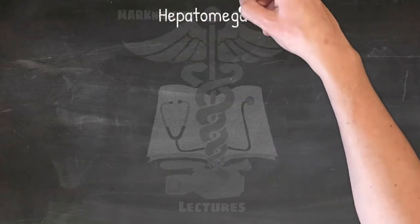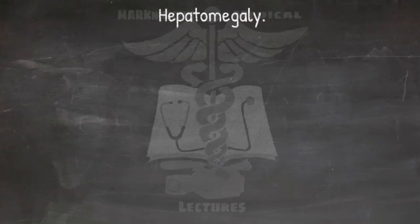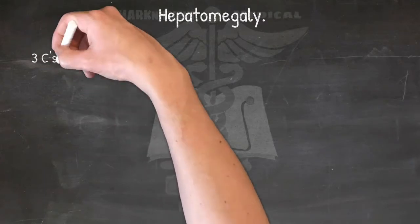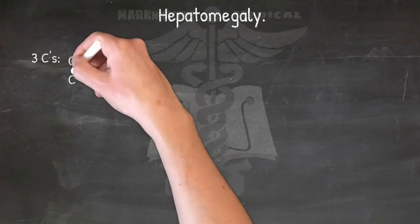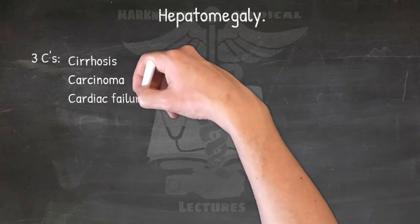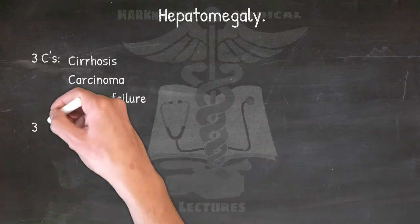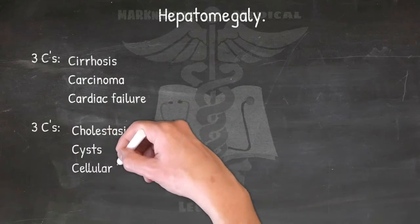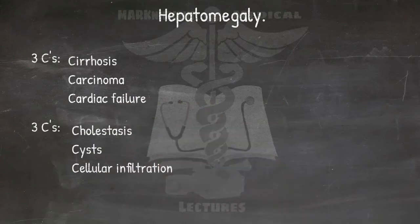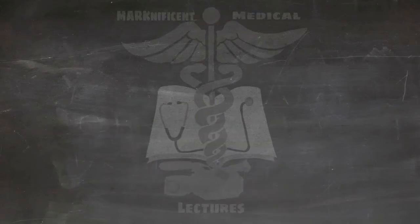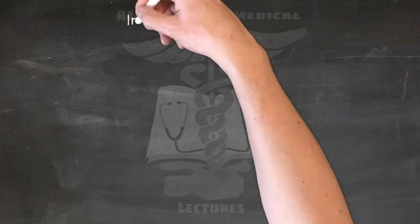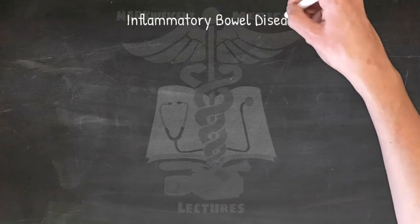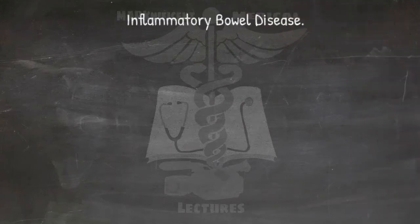Cases of hepatomegaly: common causes are three C's — Cirrhosis, Carcinoma, and Cardiac failure. Rarer causes are three more C's — Cholestasis, Cysts, and Cellular infiltration.